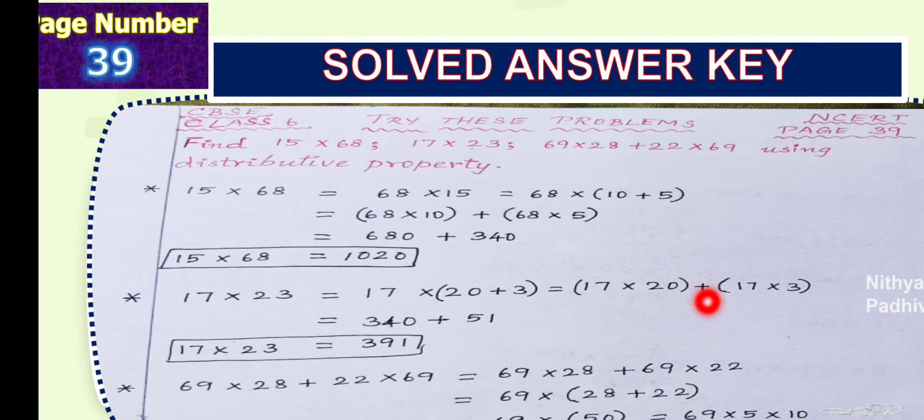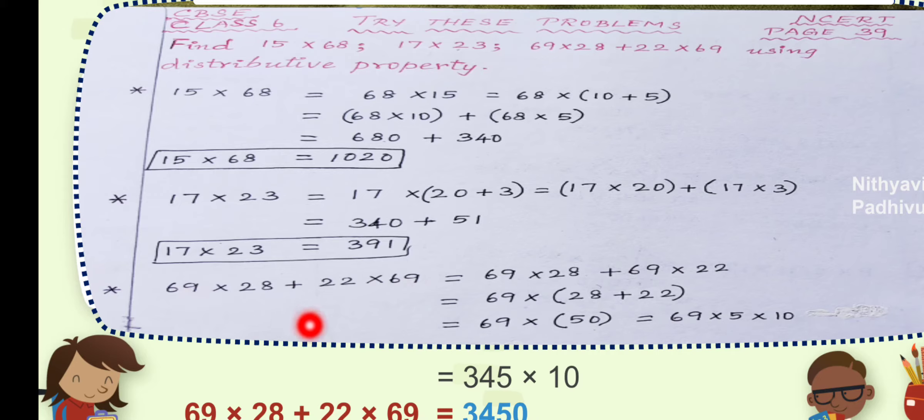Next, 69 multiplied by 28 plus 22 multiplied by 69. See, here we have sum, means addition of two terms. One term is product of 69 and 28 and the second term is 22 multiplied by 69. So, we have two products, sum of two products. In both the products, we have 69 in common.